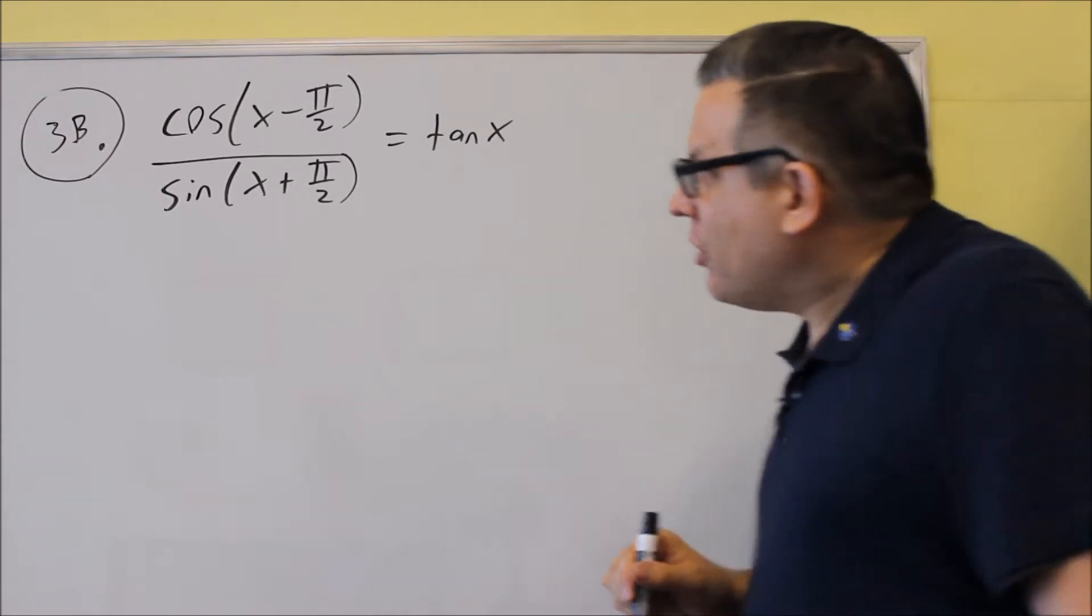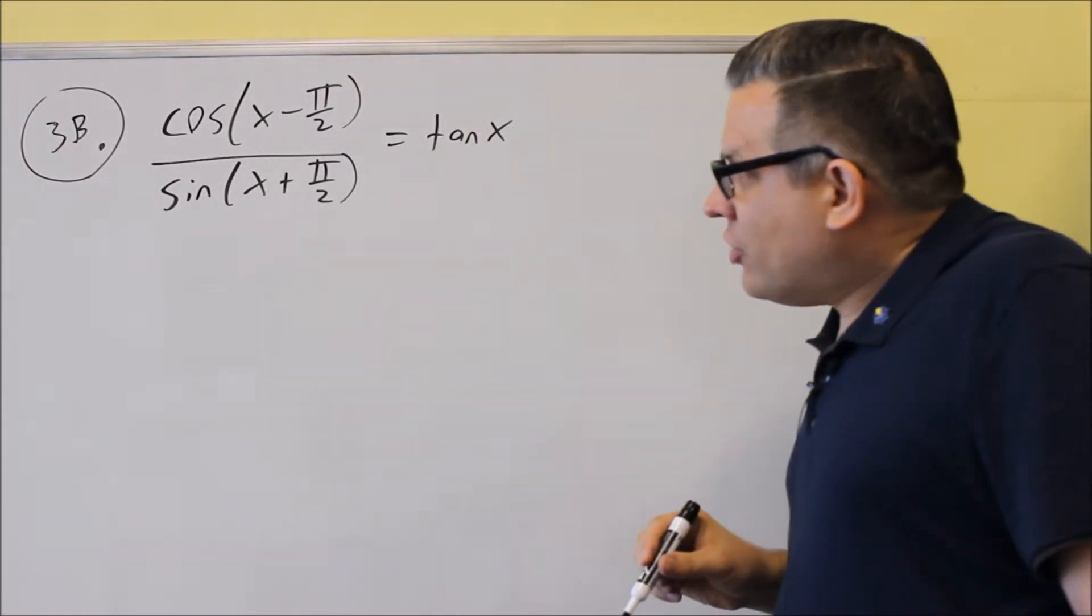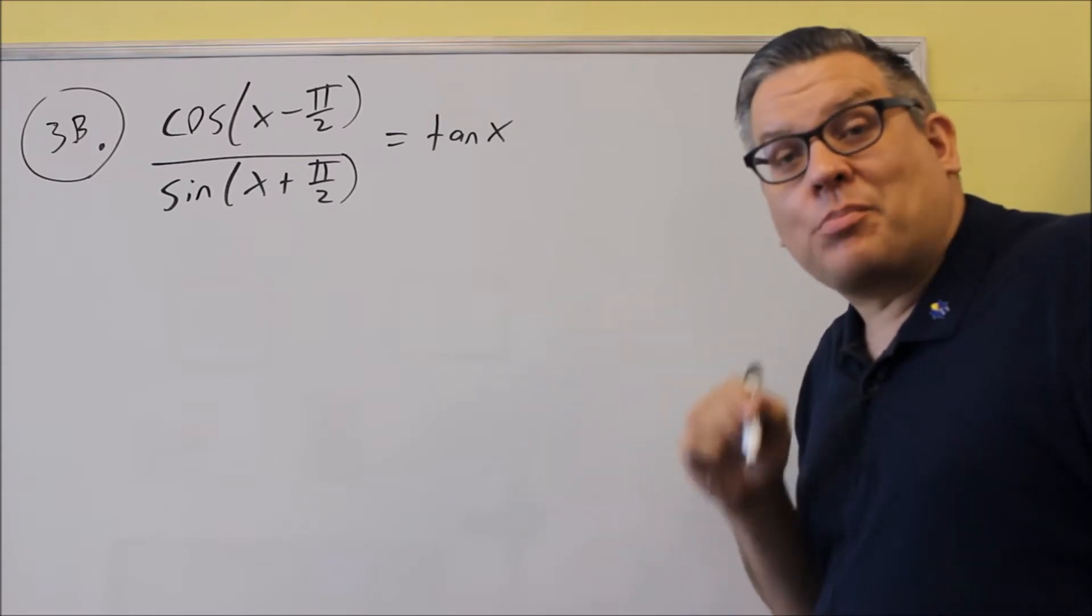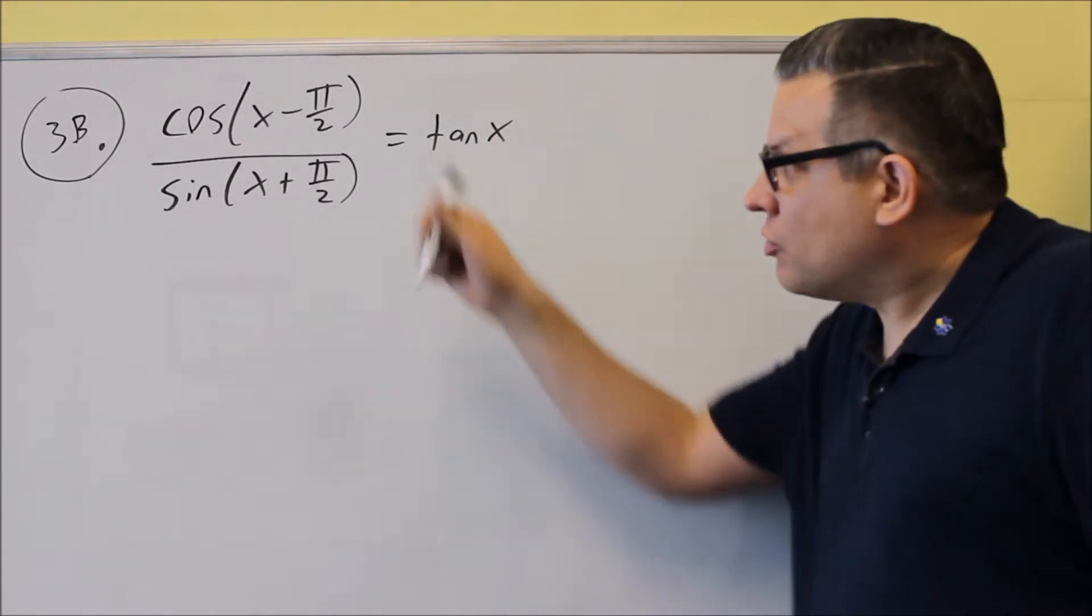Let's put in the identity for the top one. We have a difference, so we have to do the difference formula for cosine, which is cosine cosine plus sine sine.